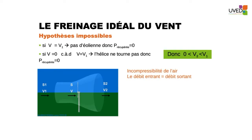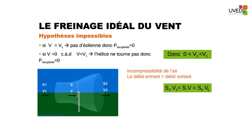Here we have the speed V2, which is comprised between 0 and V1. But the two extremes are impossible: if V2 is equal to V1, it means there is no wind turbine and no recovered energy. And if V2 equals 0, the windmill cannot rotate and no energy is recovered.